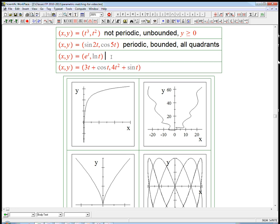Here, now we're back to definitely not periodic. Certainly I can get really big values out of e to the t. It's unbounded. And here, the x is going to be greater than 0, in fact, because e to the t is always a positive number. Ln t can be positive or negative, although it does restrict the t values.